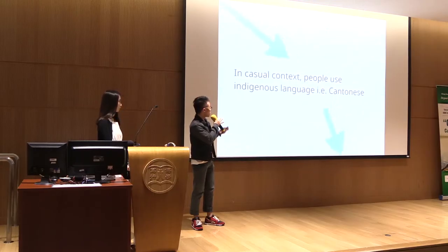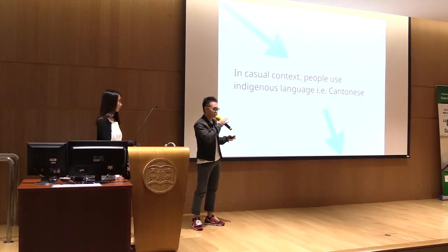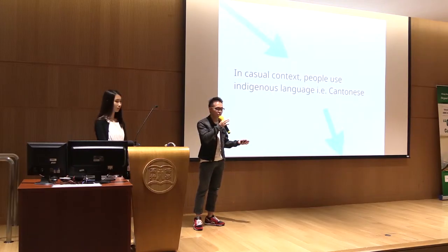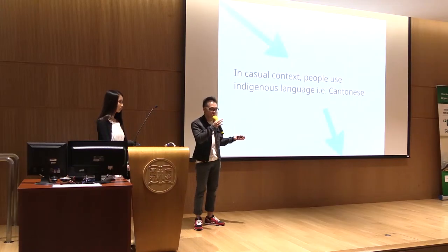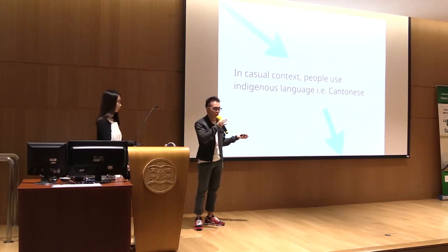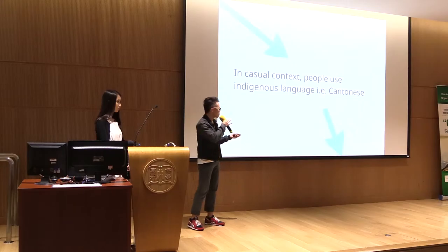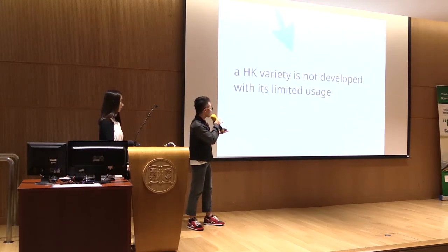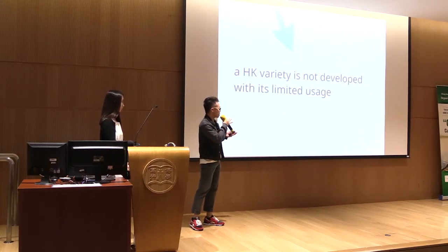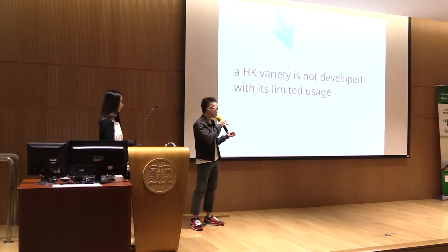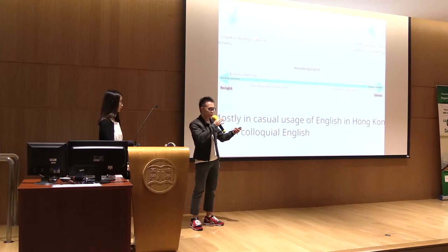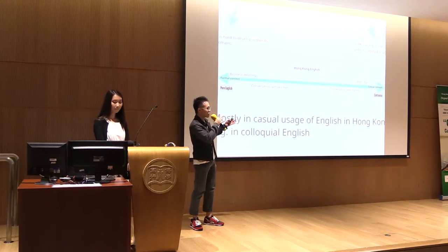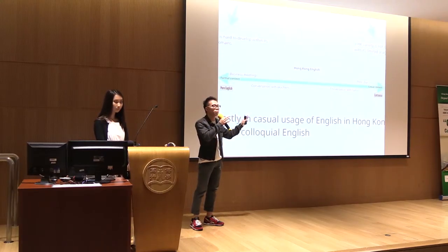On the other hand, in casual contexts, people use their indigenous language — in Hong Kong, that is Cantonese. We speak to families and friends in Cantonese and don't bother using English because we don't feel we actually know the language well enough. In this sense, a Hong Kong variety cannot develop because of its limited usage. Hong Kong English can exist only somewhere in between.